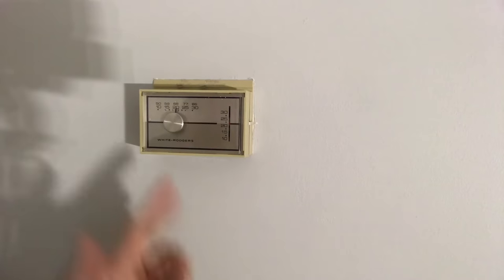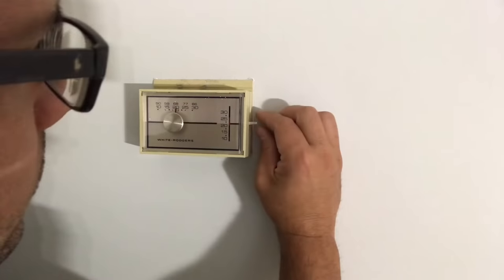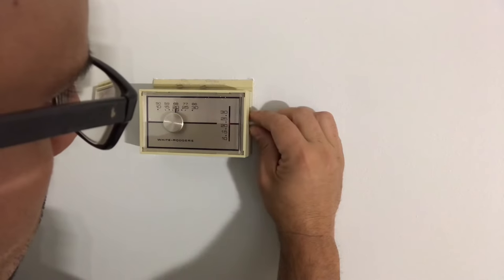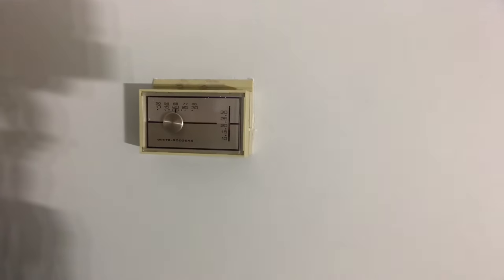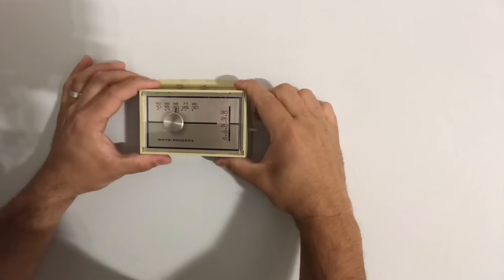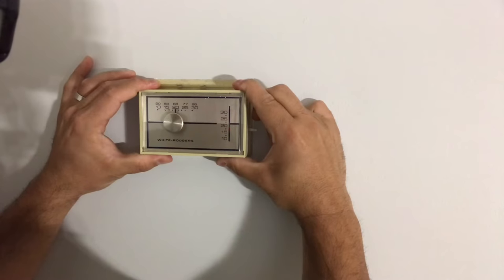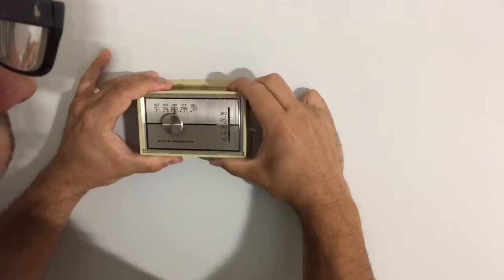Now the first step is to turn off the power to the thermostat. Go to your main circuit breaker and turn off the power to the thermostat. What I did to make sure that the power was off was it was in cooling mode, so I turned the temperature down to make sure that the air conditioner didn't turn on. So I knew that the power was off on the thermostat.